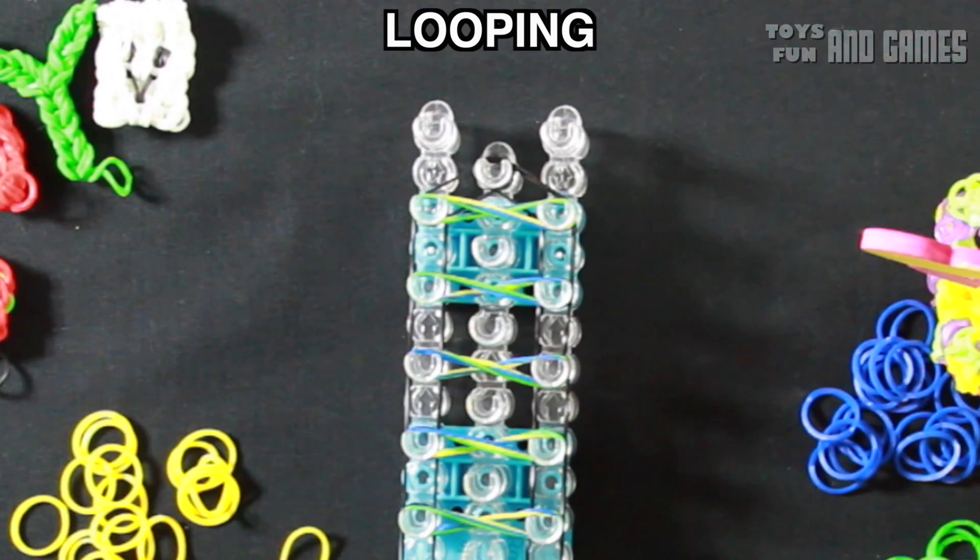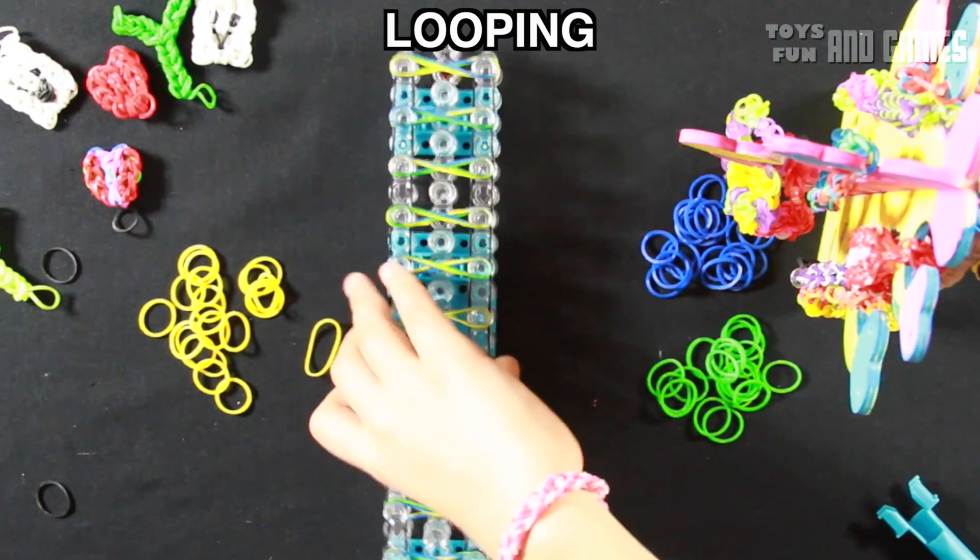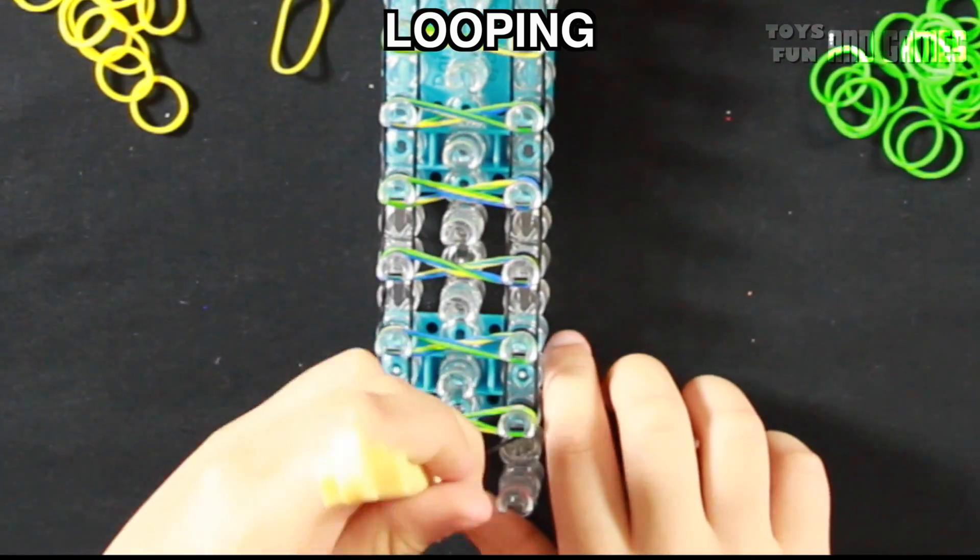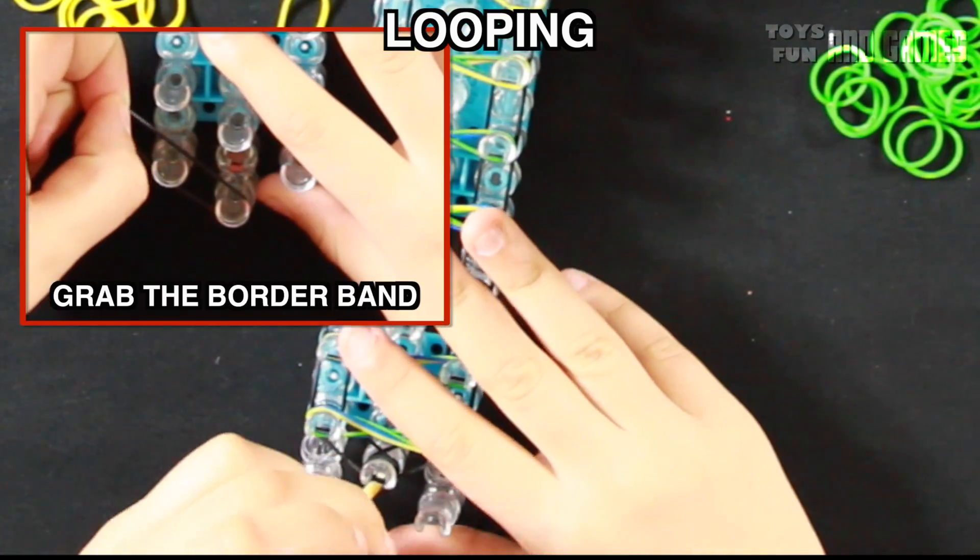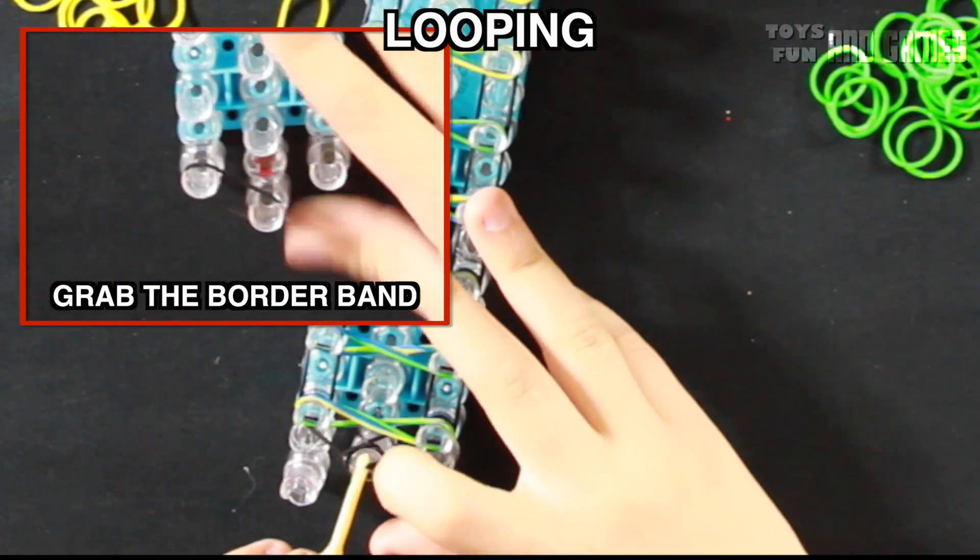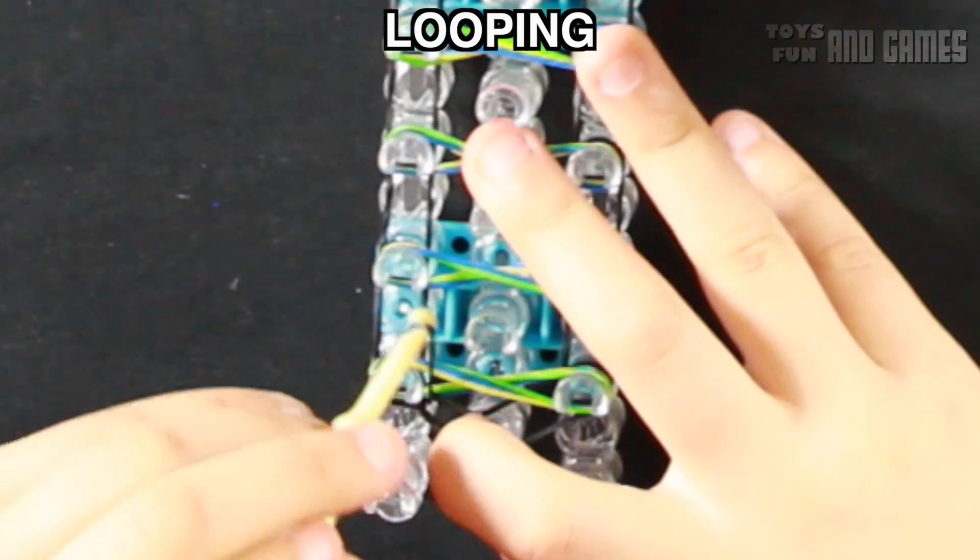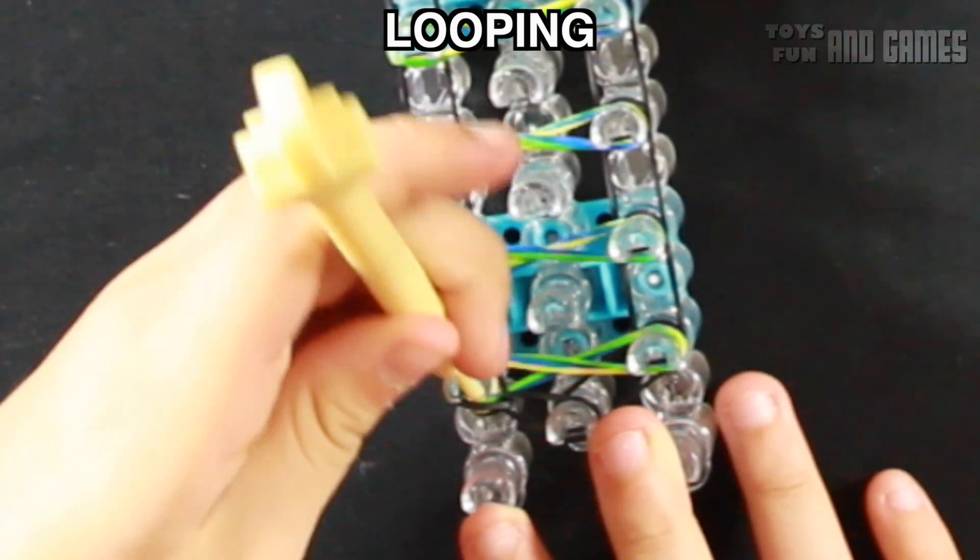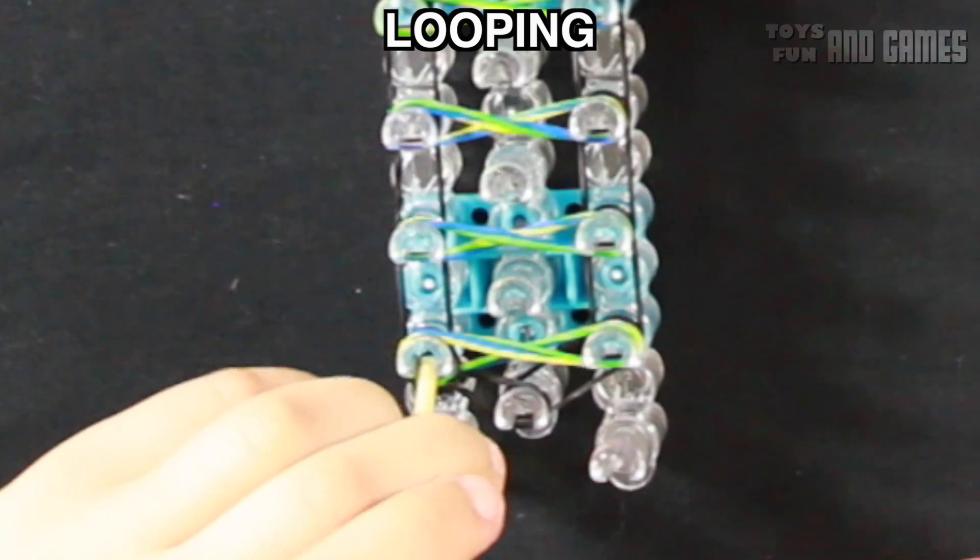Looping. What we're going to do is turn the loom around, pull our cap band back, and then grab our first rubber band, and pull it to your left. And we're going to go up, pull these rubber bands back, and grab the last one.